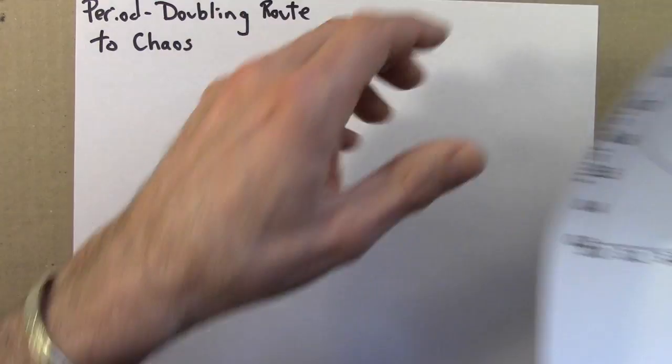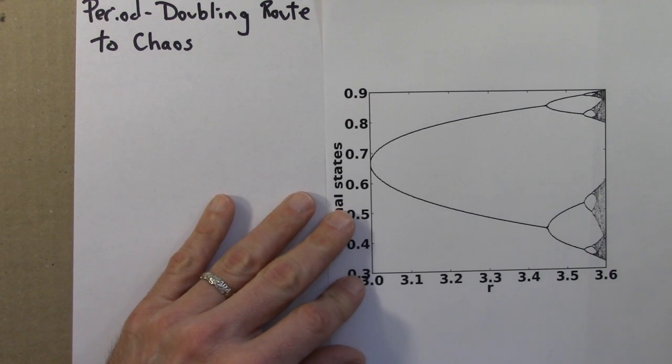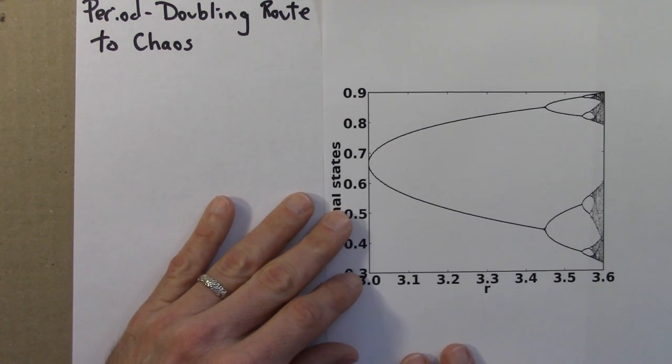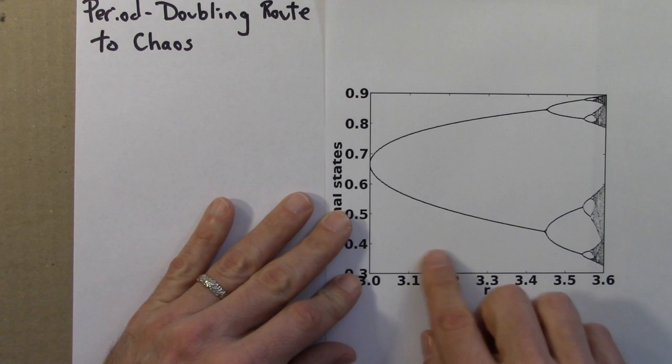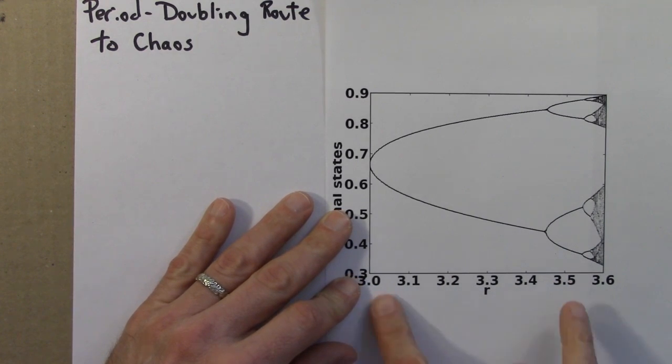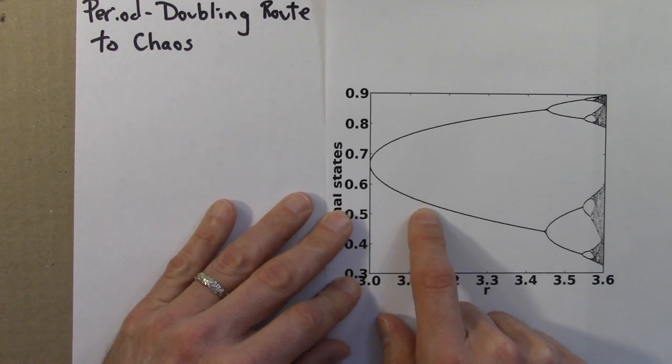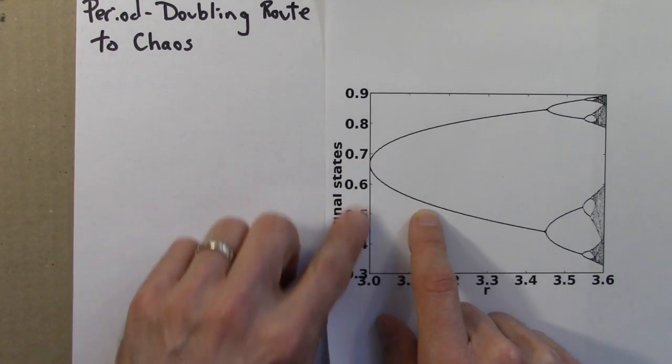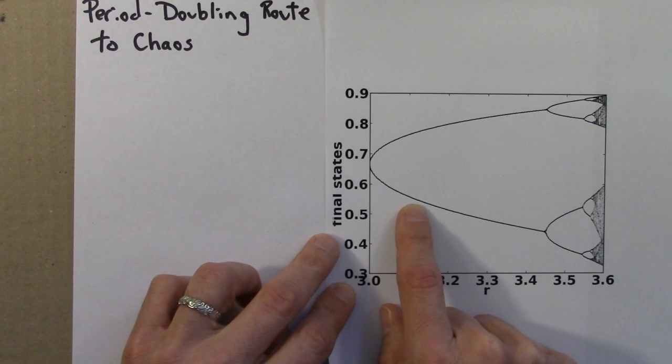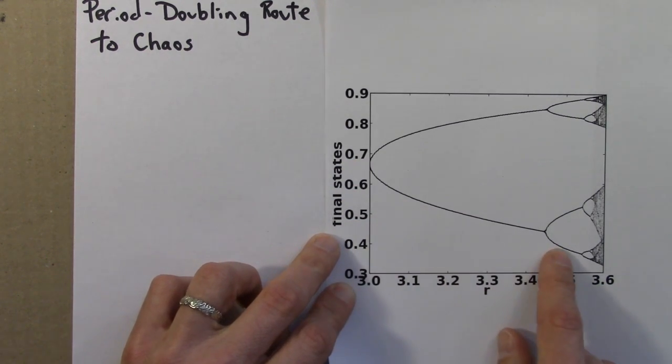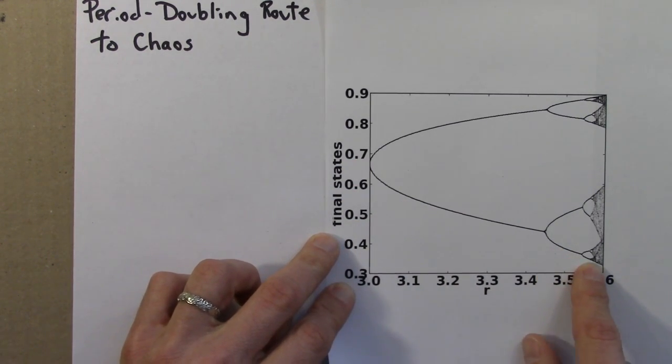So I'm going to zoom in on that even more. And we'll look at this bifurcation diagram. So now this goes just from 3 to 3.6. It's period 1 over here. At 3.0, it becomes period 2, then period 4, then period 8, and so on.